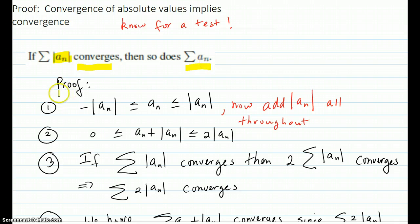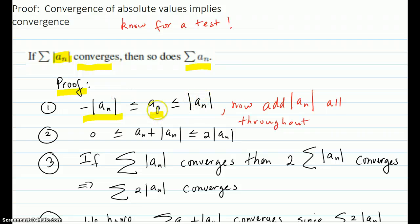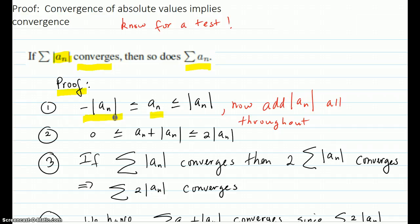Here's the proof you should know for a test. a_n is trapped between the negative absolute value and the positive absolute value, because the a_n terms might be negative — some could be negative, some could be positive. But a_n is definitely trapped between these two values.